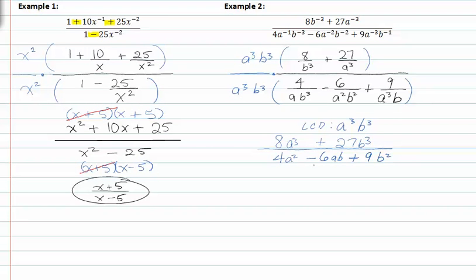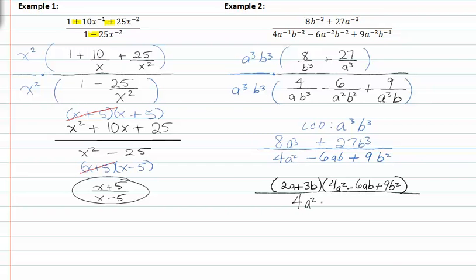From here, I need to see if my numerator or denominator will factor. My numerator does factor — it's a sum of cubes, so it factors to two a plus three b, times four a squared minus six ab plus nine b squared. In the denominator, nothing factors; it's exactly that same trinomial. Notice that the numerator factor matches the denominator exactly, so they divide out, and my final answer is two a plus three b.